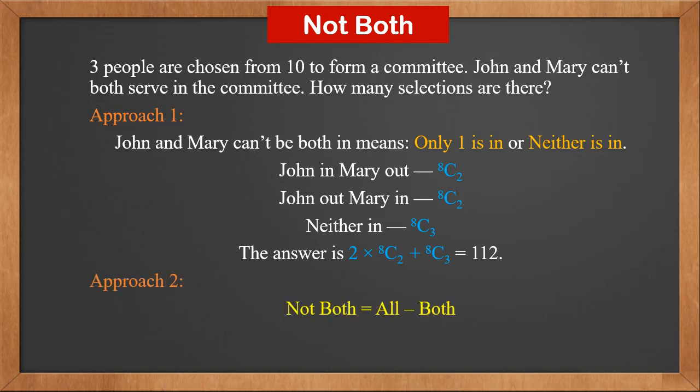The second approach is easier. Not both is equal to all minus both. All is 10C3. If both serve on the committee, 1 position is left for the remaining 8 people to fill — this is 8C1. So the answer is 10C3 minus 8C1, which is also 112. The second approach is the recommended one — it's a lot easier.